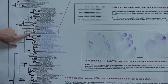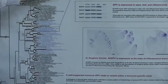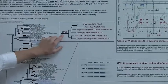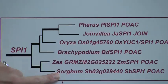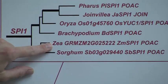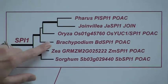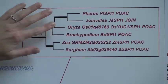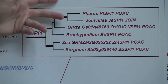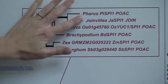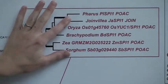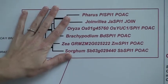But the SPI1 clade is right here — this is what I'm most interested in. You'll see it blown up here. We have SPI1 genes in sorghum, in maize where it was originally characterized, in Brachypodium, and in rice. And two at the top are paired in the Joinvilleaceae. So these SPI1 genes are highlighted and they're very closely related.